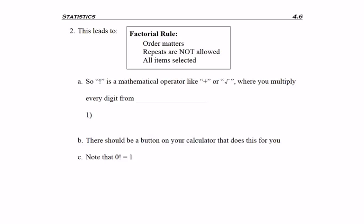So this leads us to the factorial rule, which is written as N factorial. So that exclamation mark after a number is called factorial. Using the factorial rule is because order matters for the problem you're solving, repeats are not allowed, and everything that you have available to you is being selected.